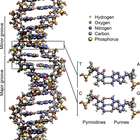Some non-coding DNA sequences play structural roles in chromosomes. Telomeres and centromeres typically contain few genes but are important for the function and stability of chromosomes. An abundant form of non-coding DNA in humans are pseudogenes, which are copies of genes that have been disabled by mutation. These sequences are usually just molecular fossils, although they can occasionally serve as raw genetic material for the creation of new genes through the process of gene duplication and divergence.